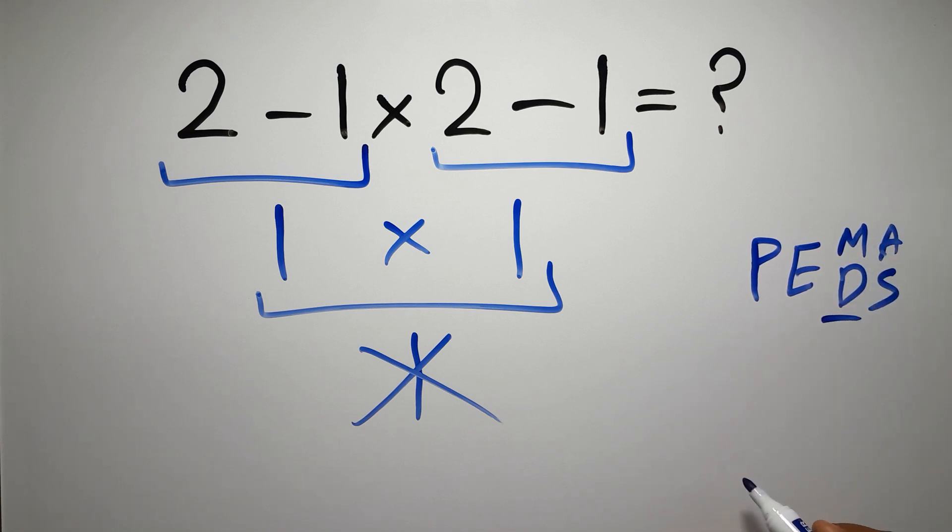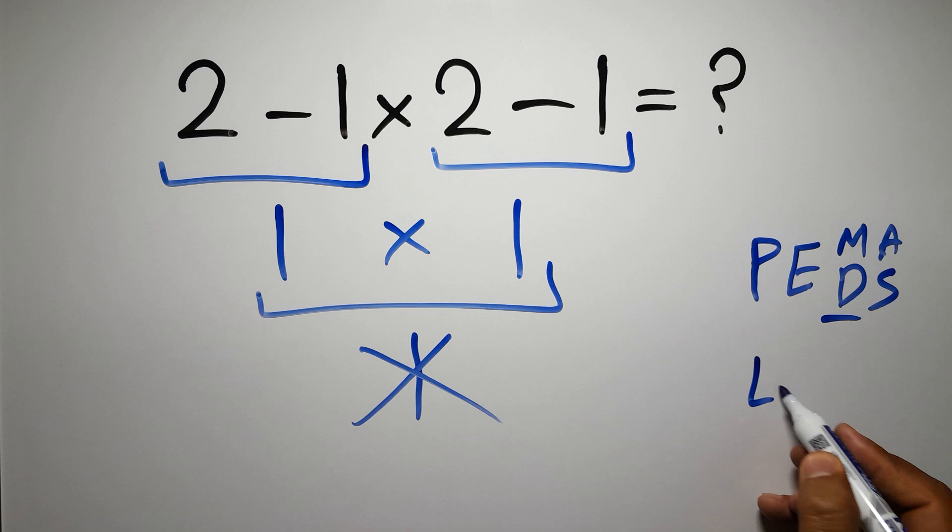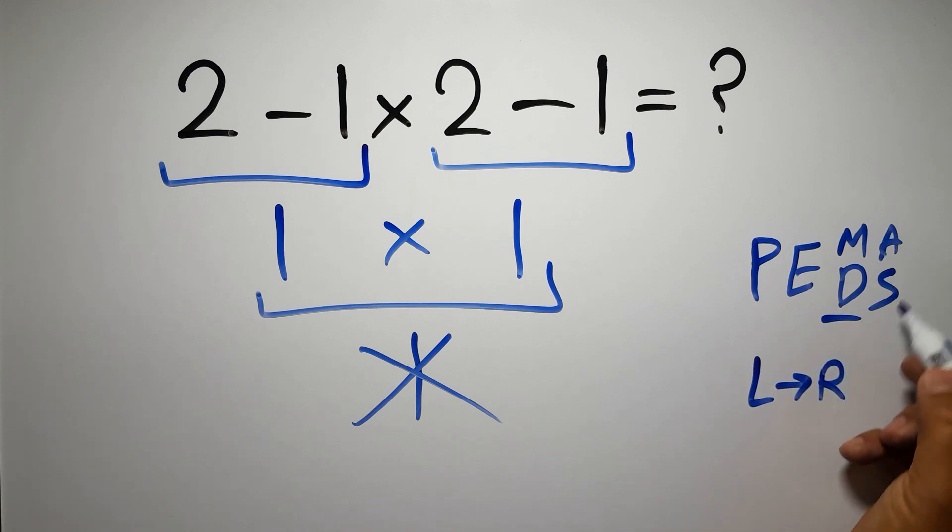Remember that multiplication and division have equal priority and we have to work from left to right, and the same applies to addition and subtraction.